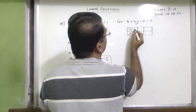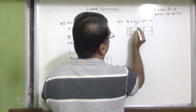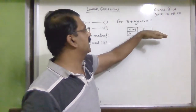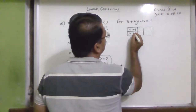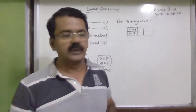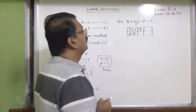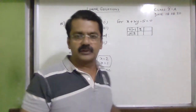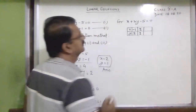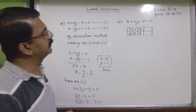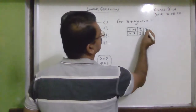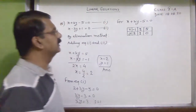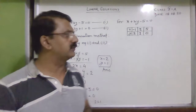For equation 1, x + 3y − 5 = 0: when x = −1, we get −1 − 5 = −6, so 3y = 6, y = 2, giving point (−1, 2). When x = 2, we get 2 − 5 = −3, so 3y = 3, y = 1, giving point (2, 1). When x = 5, we get 5 − 5 = 0, so y = 0, giving point (5, 0).